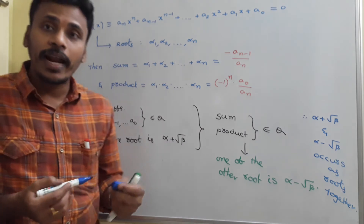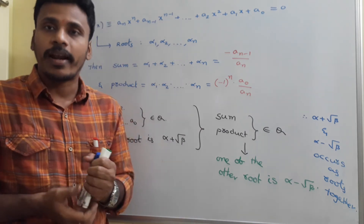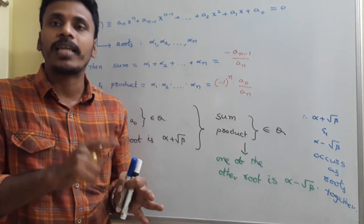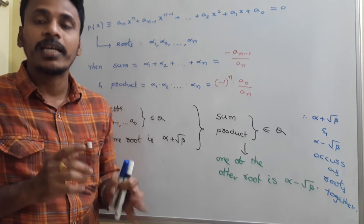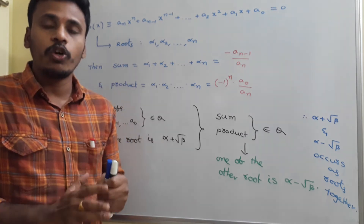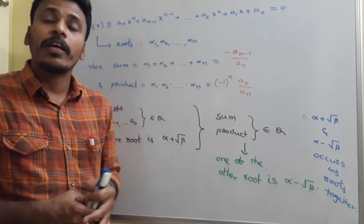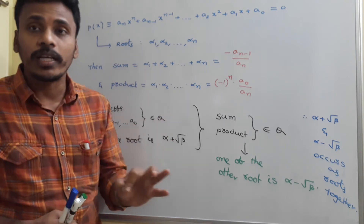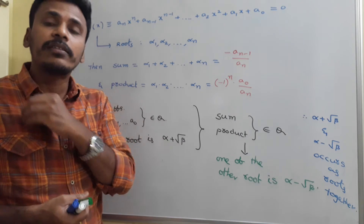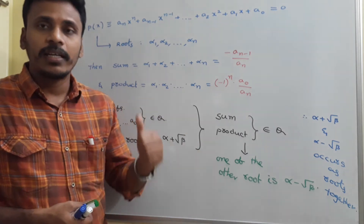We already discussed this in quadratic also. If the coefficients of a quadratic equation are rational numbers and one root is 2+√3, then for sure the other root is 2-√3. The same thing we are extending for polynomials. It is very clear that if the coefficients are rational and one root is of the format α+√β, then the other root is α-√β.